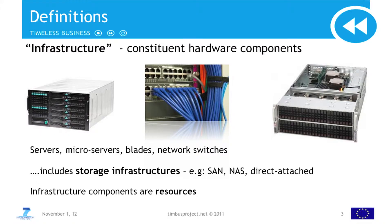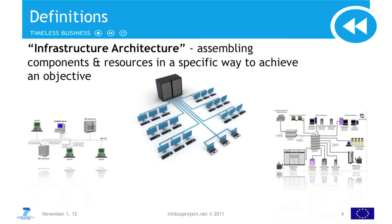Let me start with a couple of definitions, just in case people aren't sure what I mean by infrastructure. Infrastructure is all of the components and hardware that sit behind a business process — things like servers, laptops, network switches, and storage systems. When we talk about architectures, we're arranging those resources in a specific way to meet a goal. The analogy is like Lego blocks — you're trying to build a house, and there are many different arrangements of those blocks to make different kinds of houses.